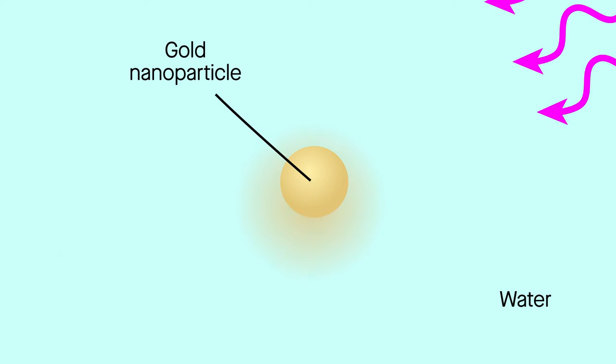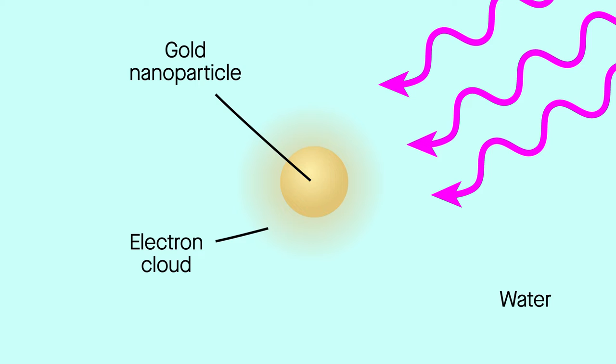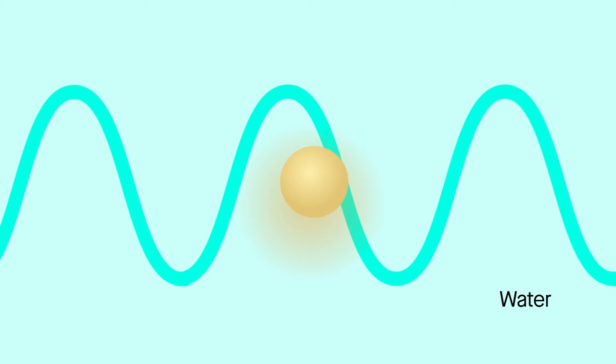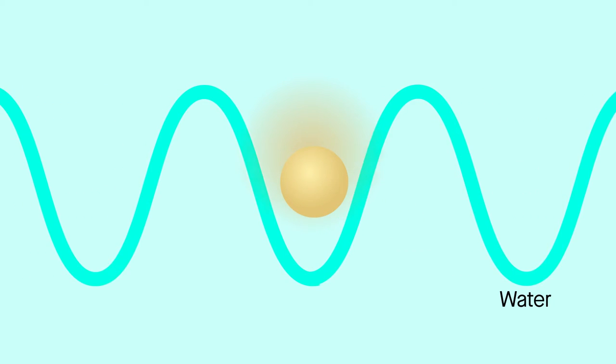When light of just the right frequency strikes a metal nanoparticle, for example, the electrons in the particle begin to sizzle at that same frequency. The result is an oscillating electromagnetic field that ripples through the medium surrounding each particle.